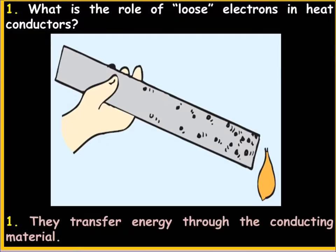What is the role of loose electrons in conductors? They transfer energy from the conducting material. If something is a good electrical conductor — for instance, copper, or even better, silver — it will also conduct heat. Something such as rubber, paper, wood, or air that does not conduct electricity would be a poor conductor of heat.